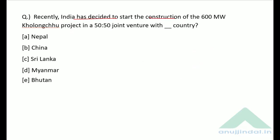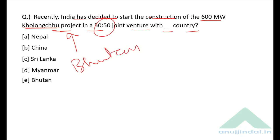India has decided to start construction of the 600 MW Kholongchhu Project in a 50-50 joint venture with which country? The Kholongchhu project is located in Bhutan. The correct answer is option E — Bhutan.